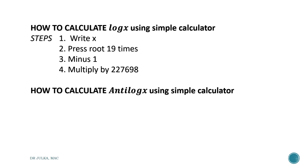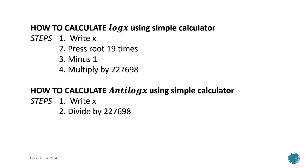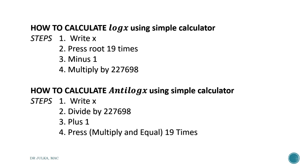How to calculate antilog — that is e raised to the power x — using a simple calculator: Step 1 — write x in your calculator. Then divide by 227698, then add 1 to the result. In the last step, press multiply and equal 19 times — multiply equal 1, multiply equal 2, multiply equal 3, and so on 19 times.